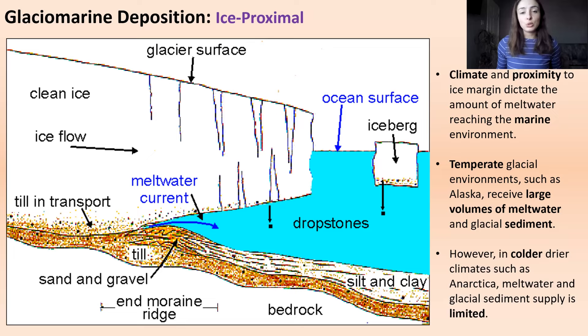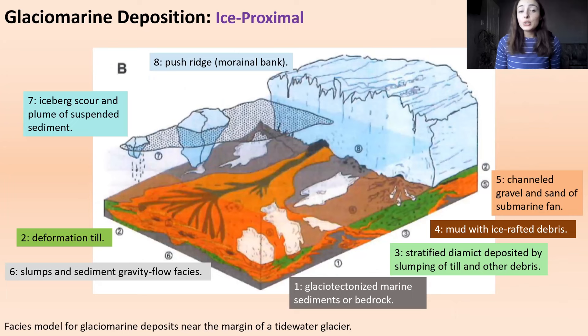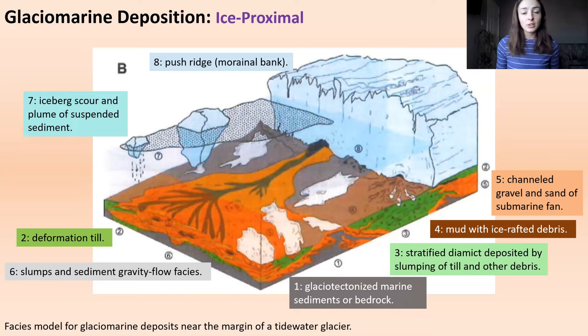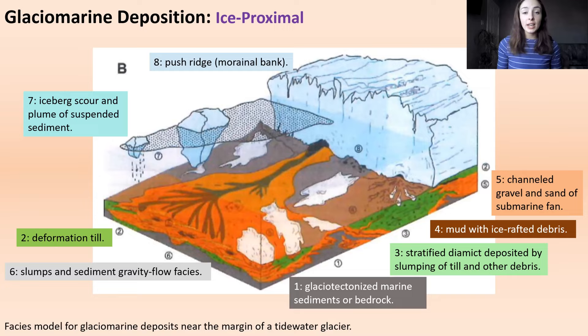Meltwater is important — you can't just have ice. It has to be melting to do anything geologically that will be preserved. In terms of ice proximal deposits, there are eight different types shown in this figure. Number one is glaciotectonized sediments or bedrock, where ice that was once over the sediment caused glaciotectonism, which is now preserved in the record. Number two is deformation till, where glaciers flow over unconsolidated sediment and deform it.